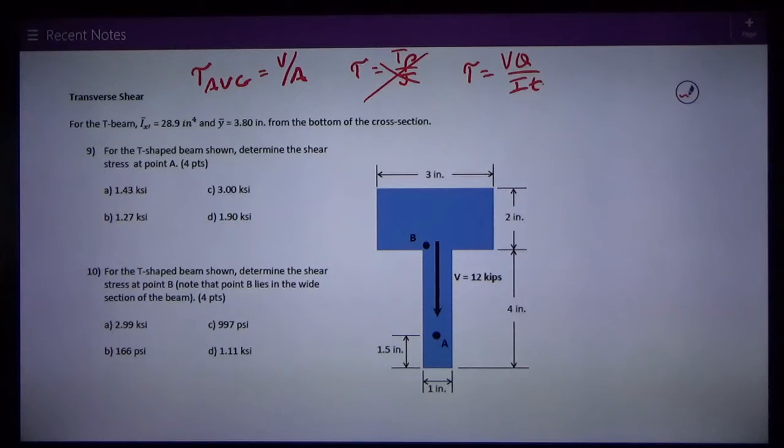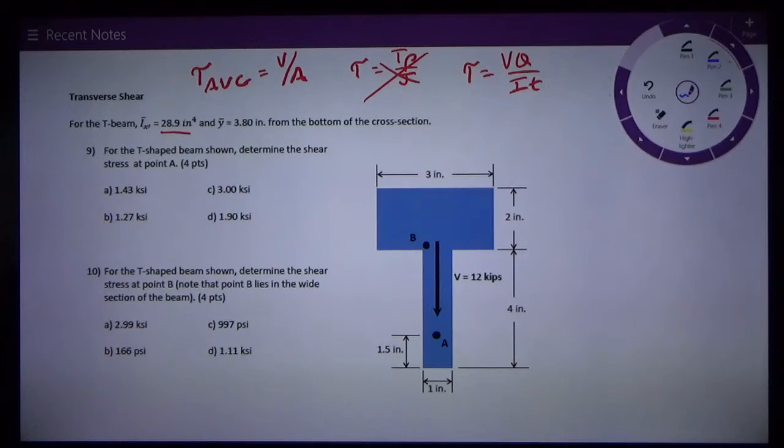So let's look at this problem here. For the T-beam, I bar X prime is 28.9 inches to the fourth, and Y bar is 3.8 inches from the bottom of the cross section. Now that's probably pertinent information, so we should mark that on the section.